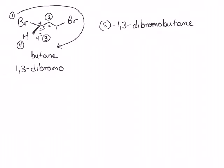Let's look at another example. This molecule contains a chiral center — an sp3-hybridized carbon with four different groups attached to it. Remember that D stands for deuterium, which is a heavier form of hydrogen. Now let's assign priorities. Hydrogen is still the lowest priority group, and the two carbon-containing substituents are the two highest groups, making deuterium the second lowest. When we compare the two carbons, they are the same, so we have to move one atom further out to find the point of difference.